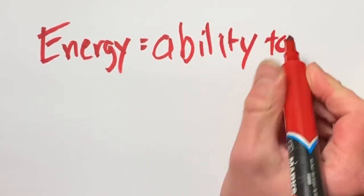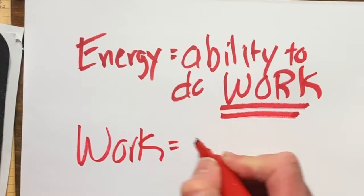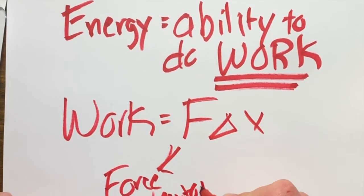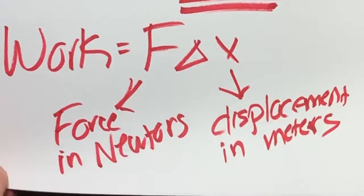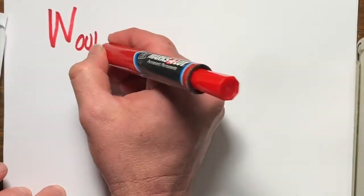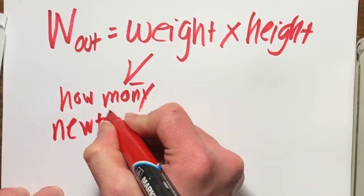Okay, quick review: energy is the ability to do work. Work is force times displacement. Force in newtons, displacement in meters. Work out, we talked about, is going to be the weight in newtons that you're lifting times height in meters.